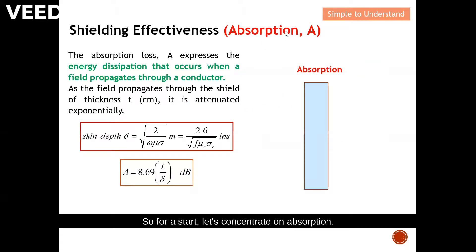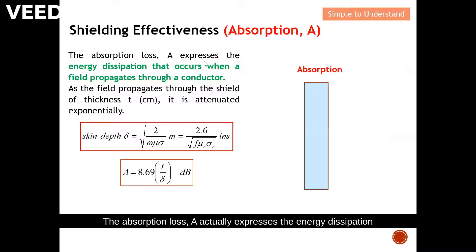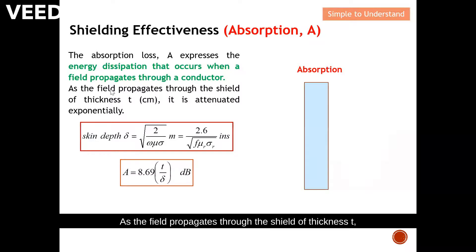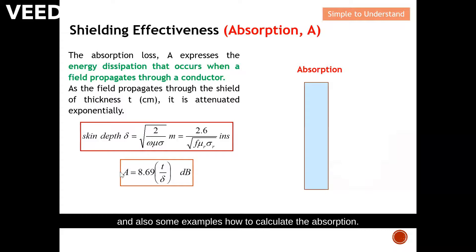Let's concentrate on absorption. Absorption loss (A) expresses the energy dissipated that occurs when a field propagates through a conductor. As the field propagates through the shield of thickness t — normally in centimeters — it is attenuated exponentially. There are two formulas to calculate absorption, which I'll explain in detail with examples later.